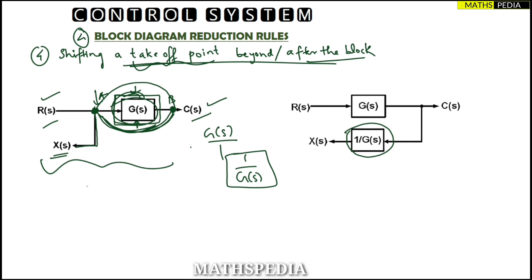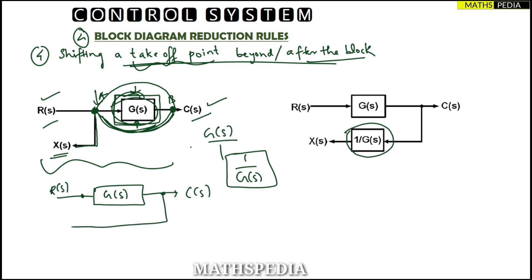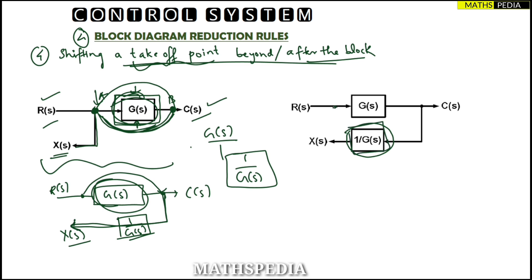So in this diagram, R(s) is the input, then G(s) block, then output C(s). I have shifted the takeoff point from before the block to after it, so signal X(s) now appears here. But as per the rule, when you jump from one point to another over a block, in that shifted signal line you must add one block in series — which has the reciprocal of the block you jumped, that is 1/G(s). This is the complete rule for shifting a takeoff point beyond or after a block.